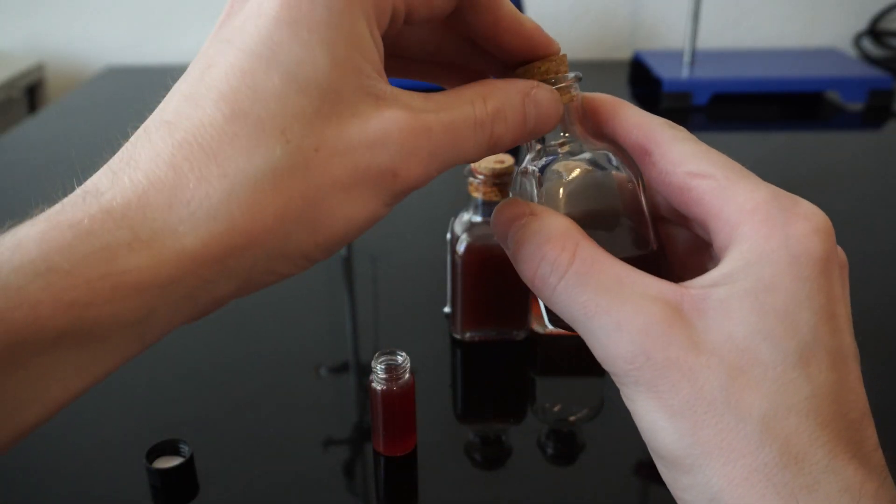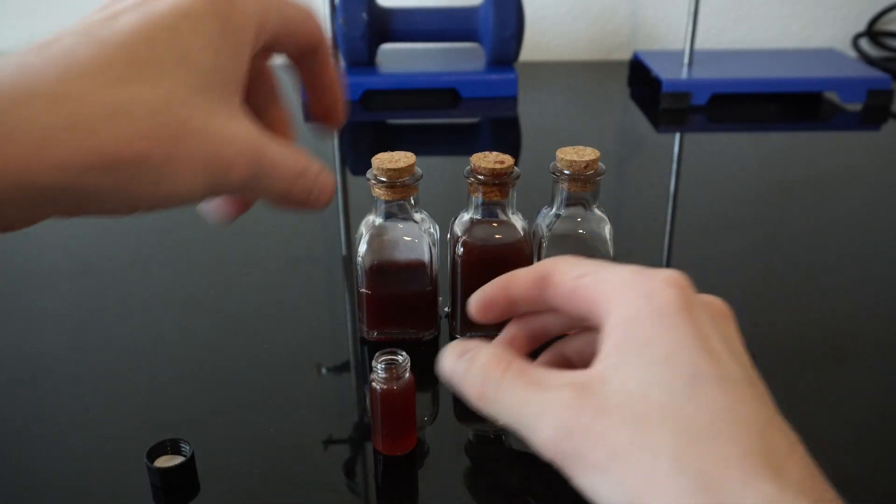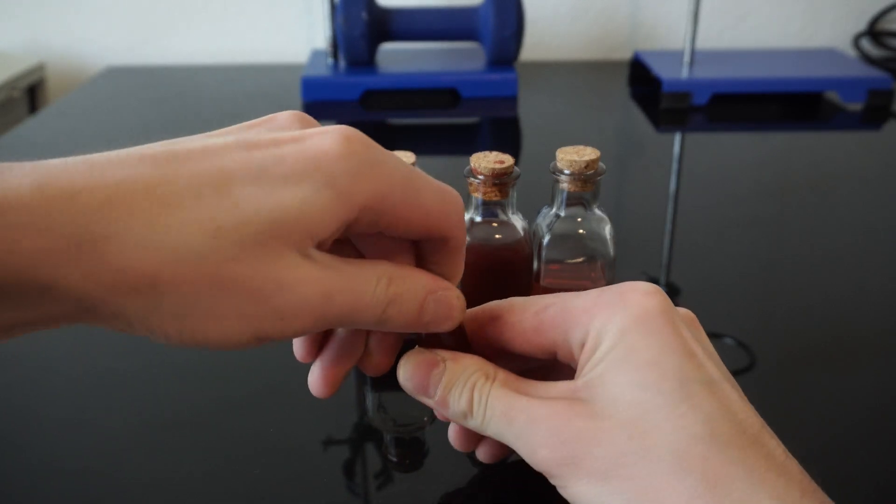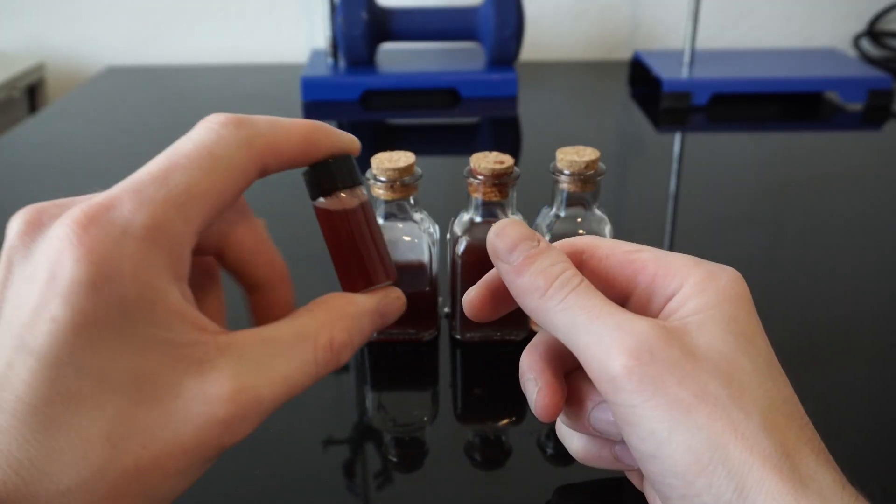The terpene that was mainly pulled off was geraniol, which is pretty cool because it's so closely related to the precursors of CBGA, which is geraniol pyrophosphate or diphosphate.